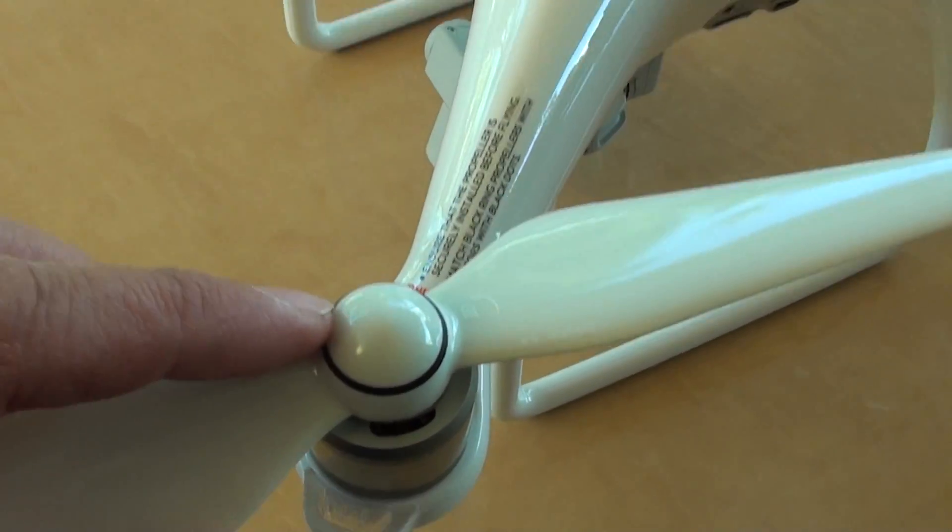You can see here there are two different colors. This one is a black ring, this one has a silver ring.